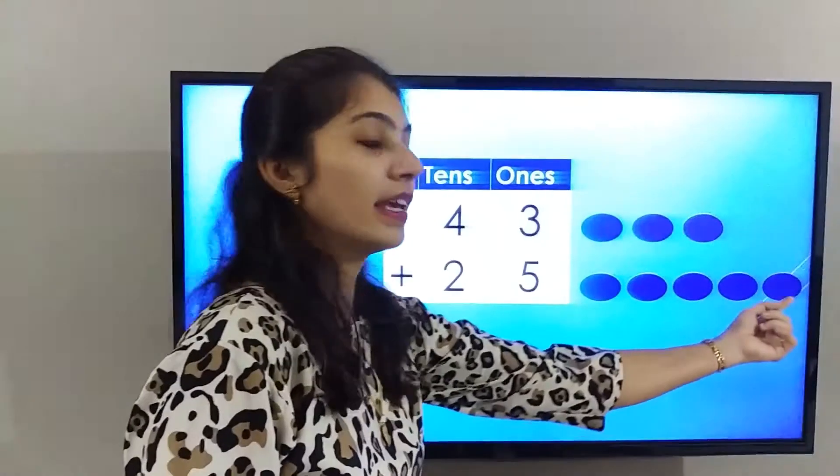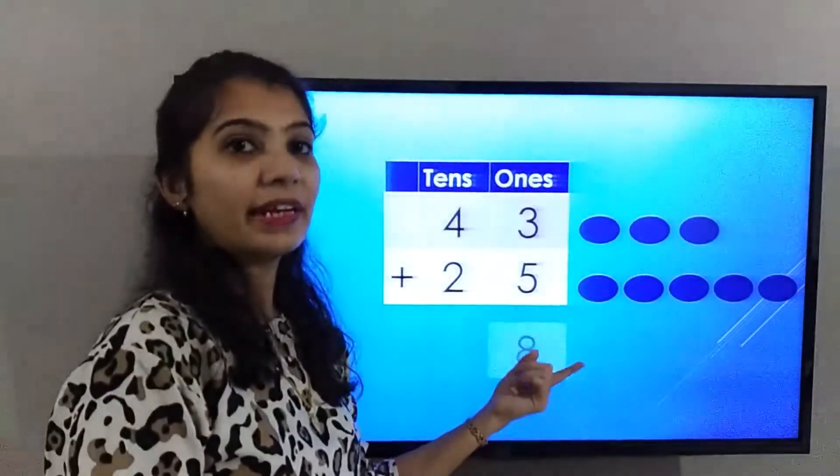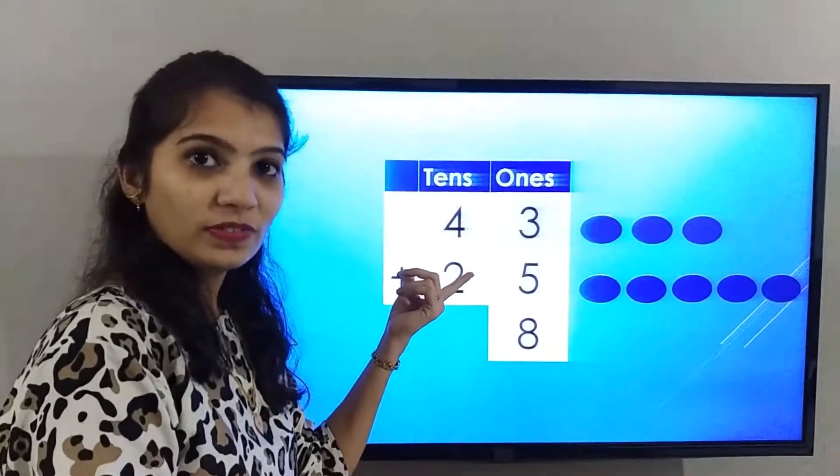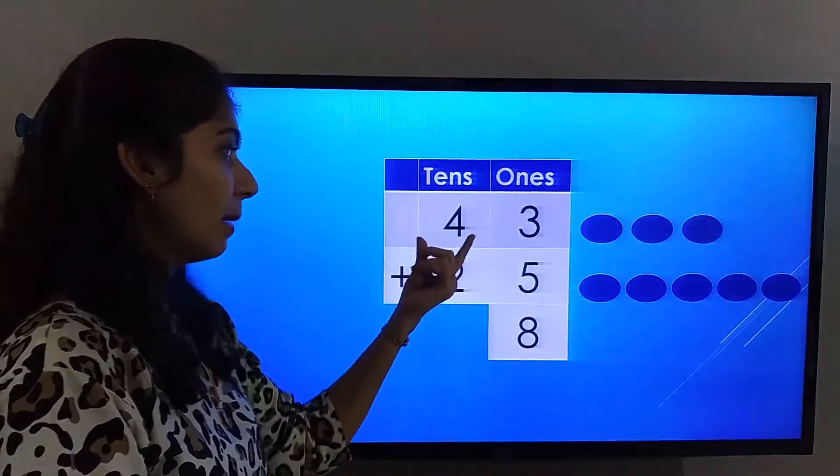6, 7, 8. The number in the ones place is 8. Let's solve the tens place. The number in the